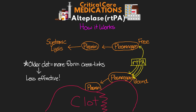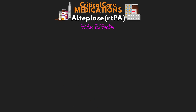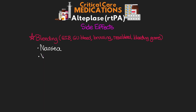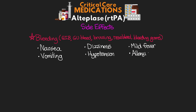Now let's talk about some of the side effects of this medication. The first and most common is going to be bleeding — this can include GI bleeds, GU bleeds, bruising, nosebleeds, and even bleeding gums. Other side effects may include nausea, vomiting, dizziness, hypotension, mild fever, and allergic reactions such as swelling, hives, and rash.